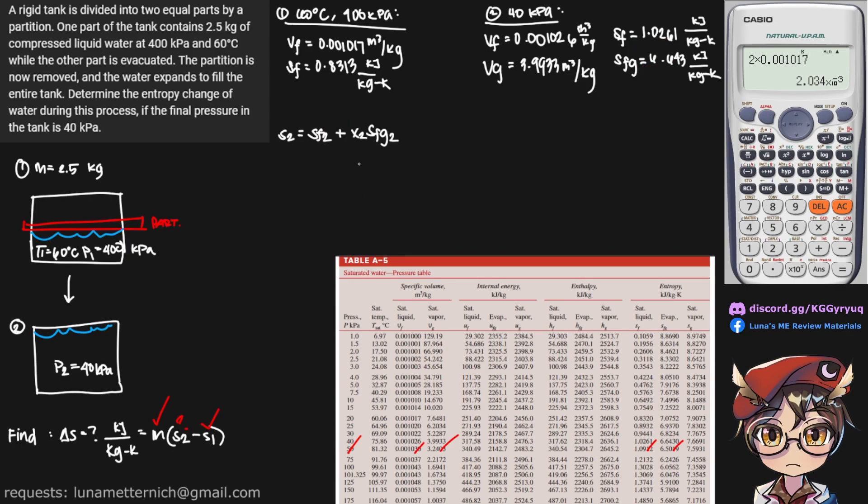Okay, so in order to find our x2, we can use this formula using our specific volume: v2 minus vf over vg minus vf. Now we already have our vf over here. vg is over here as well. So we just need to find our v2.